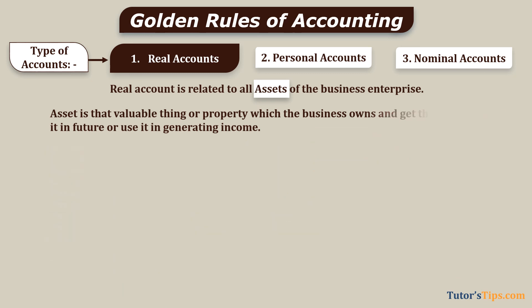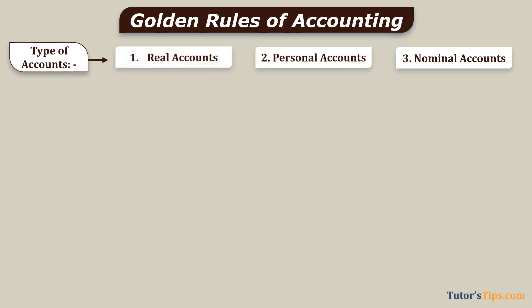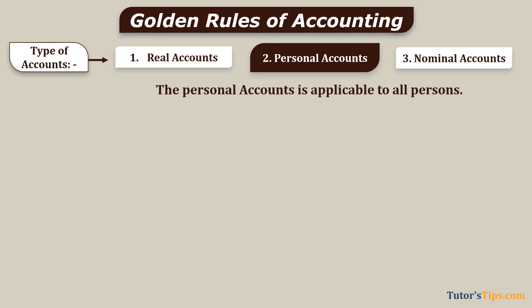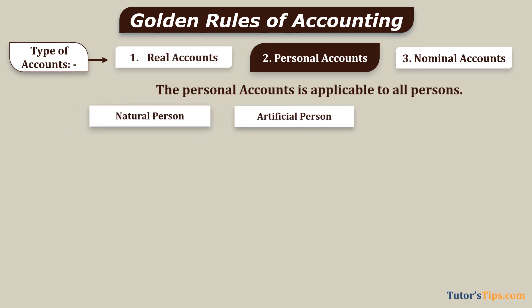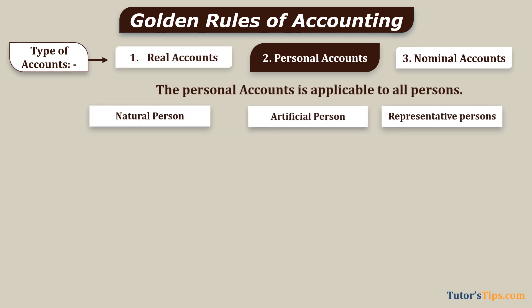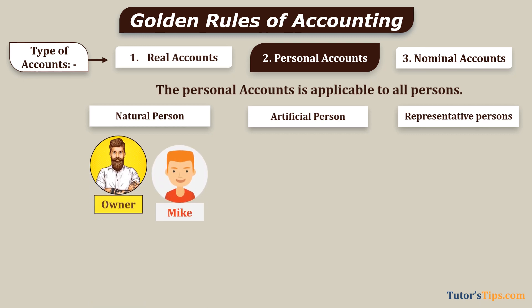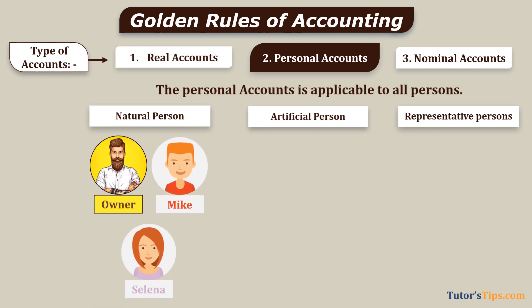Next is Personal Accounts. Personal accounts are applicable to all persons. In accounting, persons are divided into three types: natural persons, artificial persons, and representative persons. Natural person means a natural human being, like the owner of the business enterprise — Mike, Joy, Sam, Selena, etc.